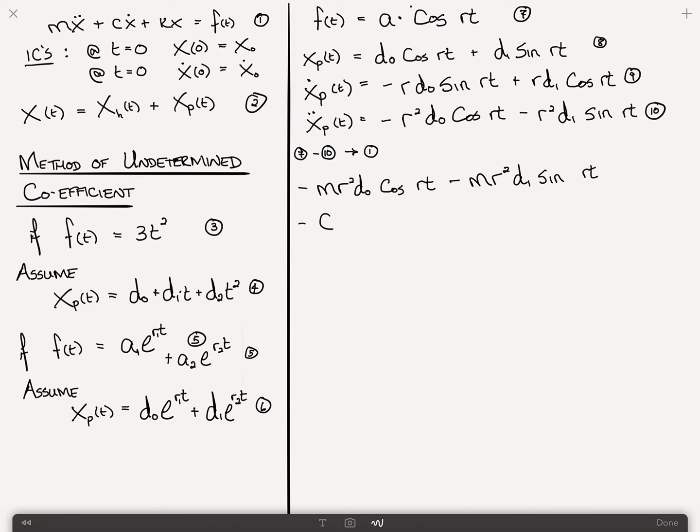Minus c times r times d0 sine rt plus k times d0 times cosine rt plus k times d1 times sine rt. And that's got to equal the right-hand side, which is just f(t), which we're given in equation 7 as a cosine rt.